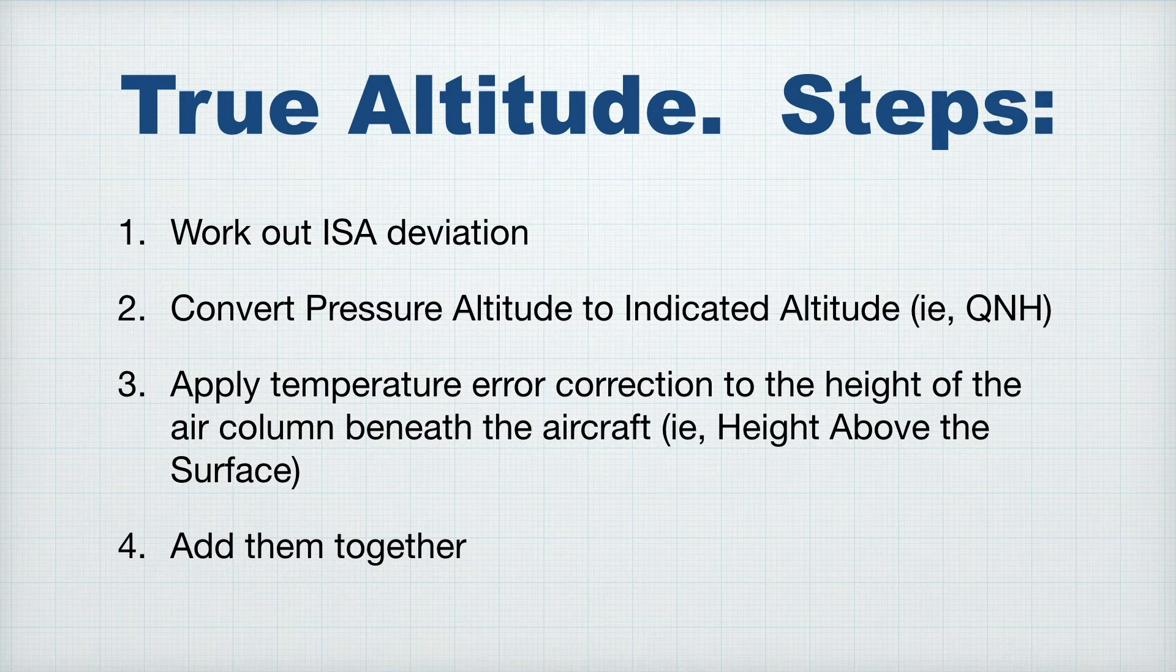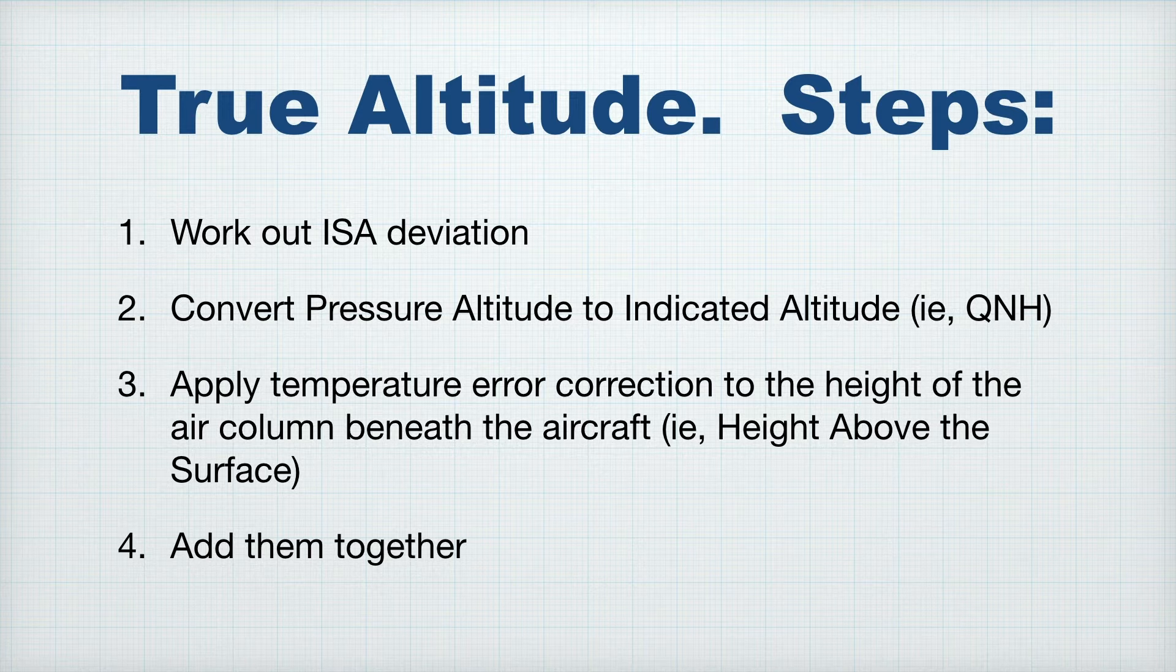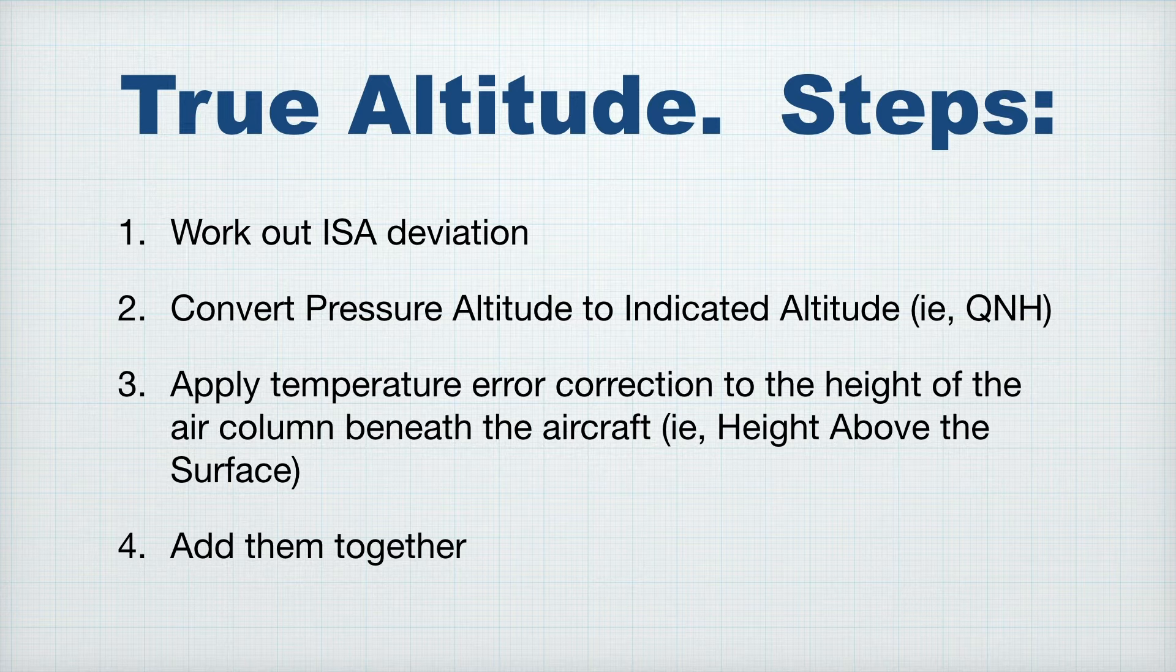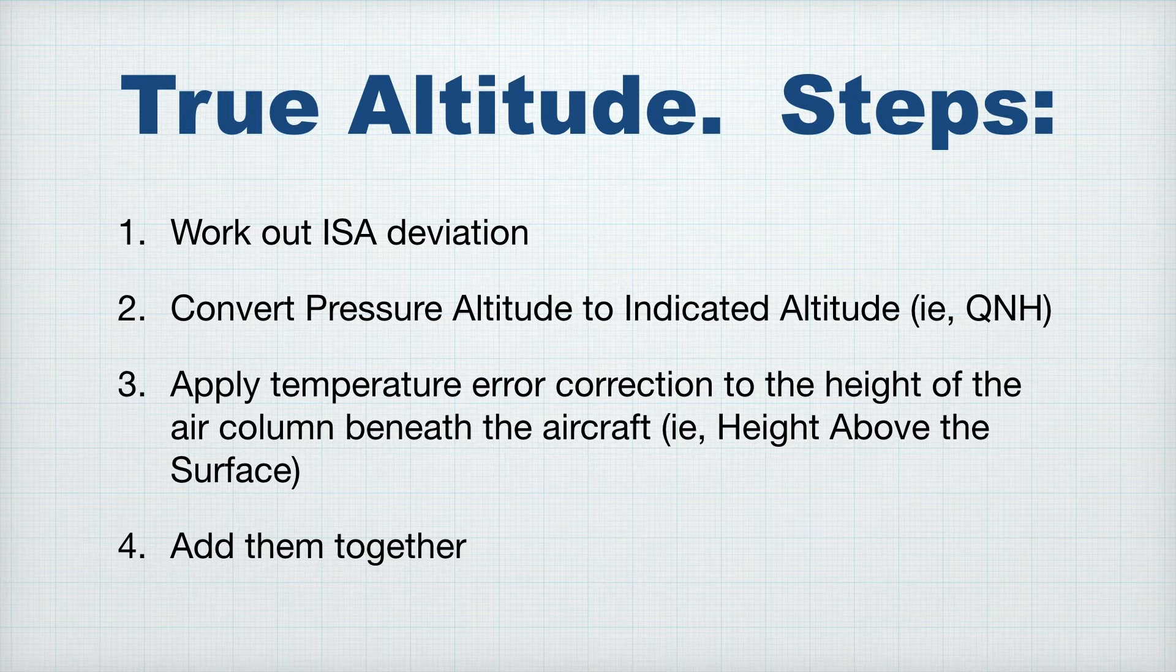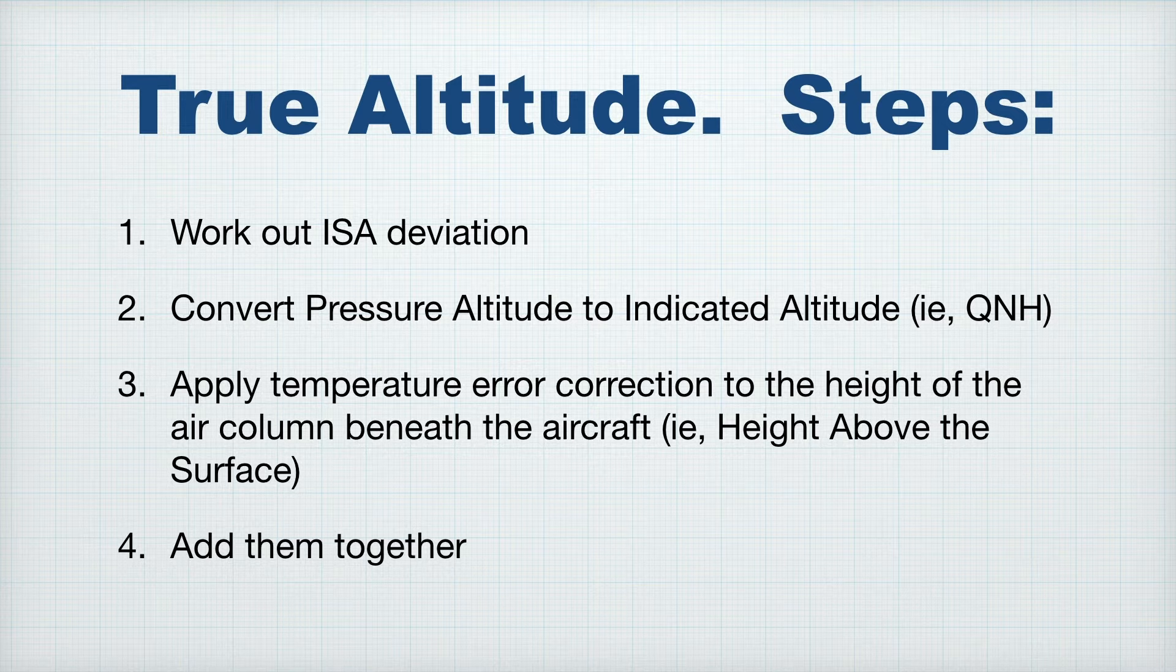So the steps, simply put, for the more simple true altitude questions are these. Number one, work out what your ISA deviation is for the flight level you are at. Number two, convert your pressure altitude, your flight level, to an indicated altitude, which is based on QNH. Then apply the temperature correction to the height of the air column between where your aircraft is and the surface it's flying over. Then add them together.